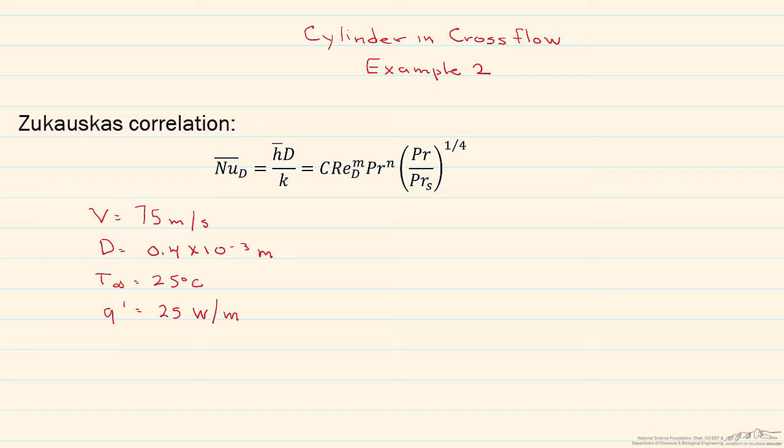And our goal, using our governing equation, is to find our surface temperature under these conditions. So we can rewrite this in terms of the surface temperature, such that the surface temperature is equal to that Q prime divided by H, and by the way, that's the average heat transfer coefficient, plus T infinity.